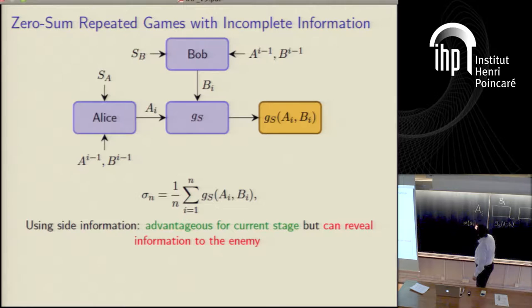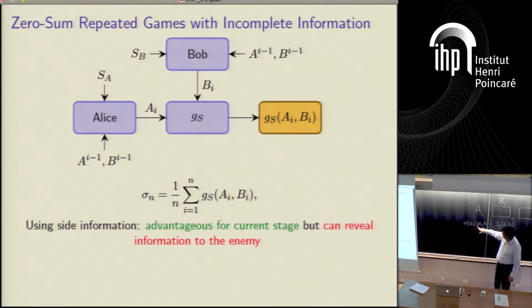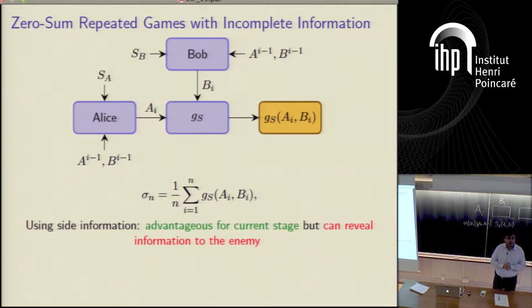The strategy of Alice is a conditional distribution: A_i given S_A, A_{1:i-1}, B_{1:i-1}. These are the strategies of Alice—these conditional variables over all previous actions, the value of side information. The strategy of Alice at stage i is this conditional distribution. Similarly for Bob. The value of the game—the only way that you can obtain information is through the actions.